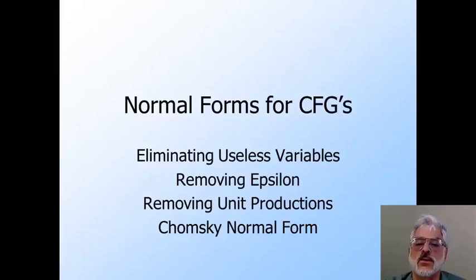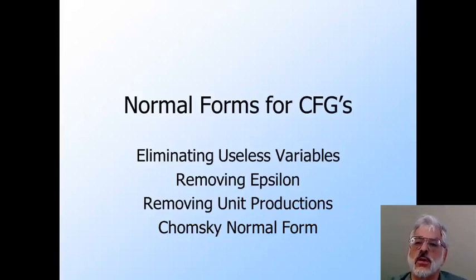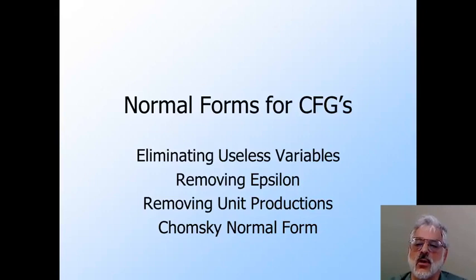Context-free grammars can be badly designed. For example, they can have variables that play no role in the derivation of any terminal string, and therefore shouldn't be there. That is analogous to states of a finite automaton that aren't reachable from the start state. There are also certain productions that, while they are necessary, cause derivations to take many steps that can obviously be combined. These include productions whose bodies are the empty string, or unit productions where the body is a single variable. We can get rid of these, and the way to do so is similar to the way we removed epsilon transitions from an NFA.